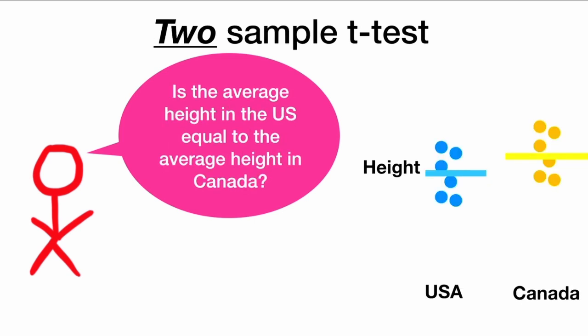Then we move on to a two-sample t-test, and we might want to ask, is the average height in the U.S. equal to the average height in Canada? So we collect two samples of data and compare the averages of the two groups. Here we can see that Canada is a little taller than the U.S., but maybe not significantly taller.